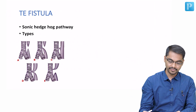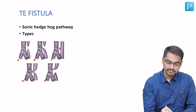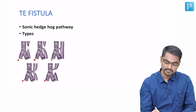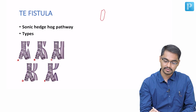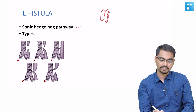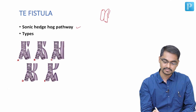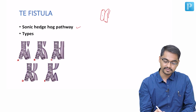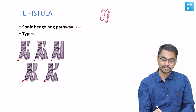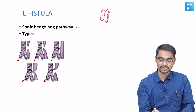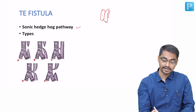We will discuss Tracheoesophageal Fistula. Normally, around 4 weeks of gestation, two buds are formed: the primitive respiratory bud and the primitive tracheal bud. There is an important pathway called the Sonic Hedgehog pathway that helps in separation of this primitive respiratory bud from the primitive foregut bud. If there is an inhibition of this Sonic Hedgehog pathway, there is a failure of separation of these two buds, leading to a communication that forms tracheoesophageal fistula.